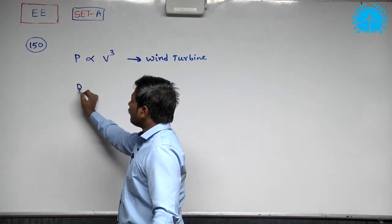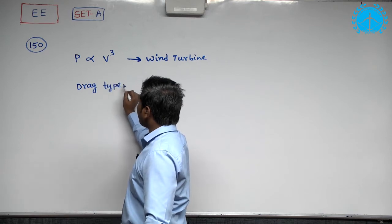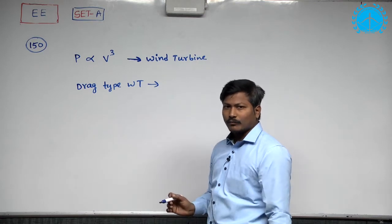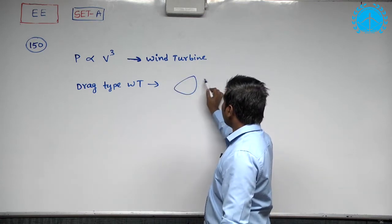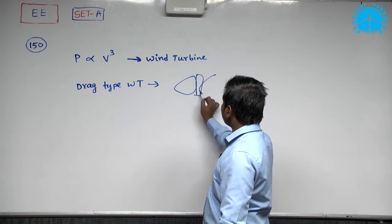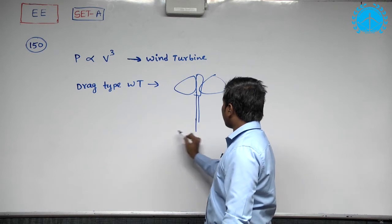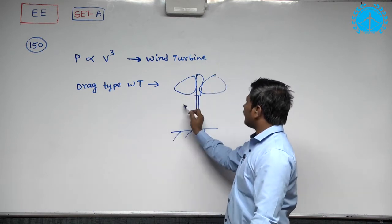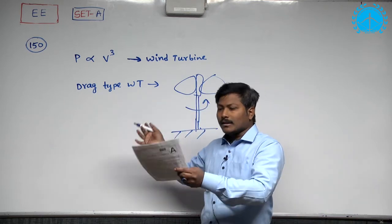Drag type wind turbine means particularly this was a vertical axis turbine. Vertical axis turbine in the sense we may have some sort of cups this way, cups of this way and the cups are rotating on the ground. That means like this the turbine is going to be rotated and as the turbine is installed that way.